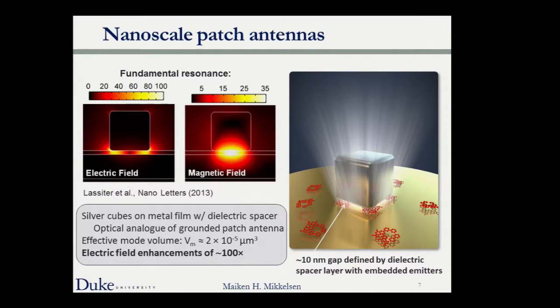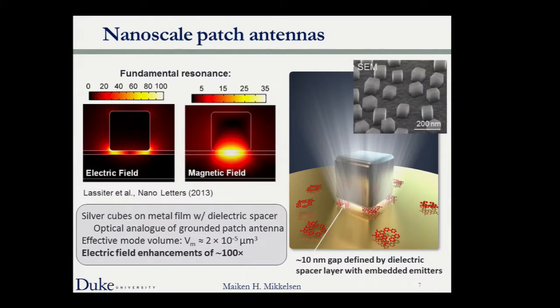A very promising structure is a silver nanocube, 75 nanometers across, placed on top of a metal film with a small gap created with a dielectric spacer, in which we can embed emitters. This is an optical analog of a grounded patch antenna. It has a very small effective mode volume, very high electric field enhancements up to about 100-fold, and a relatively large area. When we fabricate these structures, the SEM images look very similar to the cartoon.